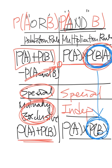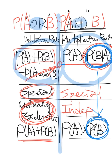Now we have a two-by-two table: general addition rule, general multiplication rule, and two columns — OR and AND. Both of them have a special case. When mutually exclusive, for OR, use the addition rule. When independent, for AND, use the special multiplication rule. So we can make the two-by-two table. Does it make sense?